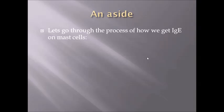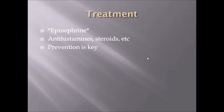The first time, your body sticks IgE antibodies specific for that antigen onto mast cells. The second time you encounter that antigen, you get a massive degranulation. And with further exposures — third, fourth, fifth — you can potentially get the same or even worse reactions.